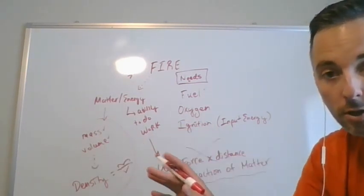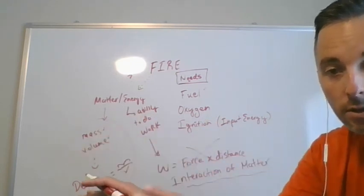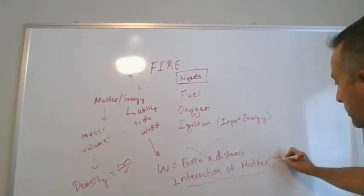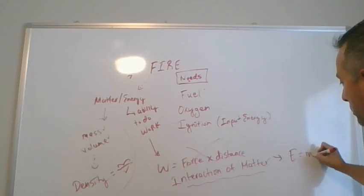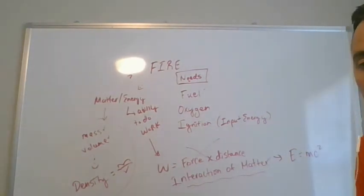And just to show you sort of a preview where this is going, that interaction is called E equals MC squared, which you may have seen before. But we'll get there. Okay.